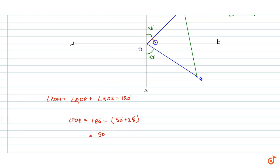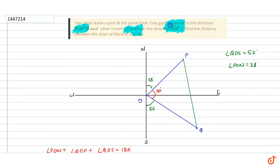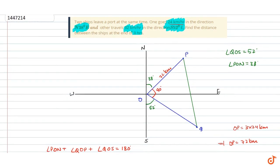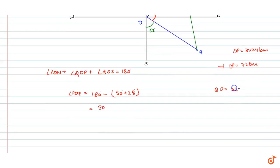Now, we are given 24 km per hour. At the end of three hours, OP distance is 3 into 24 km, which equals 72 km. And OQ distance: speed is 32 km per hour, so 32 into 3 gives 96 km.